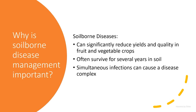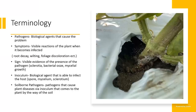Simultaneous infections can cause a disease complex. What comes to mind for me is in strawberries: black root rot, which is often a complex of Pythium, Rhizoctonia, nematodes — there's a disease complex. That really gets complicated when you're trying to rotate or use other control methods.